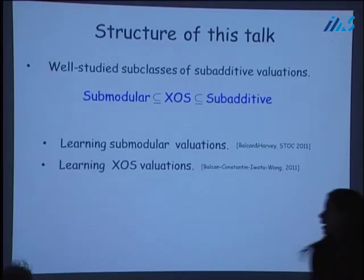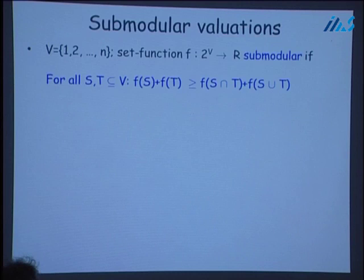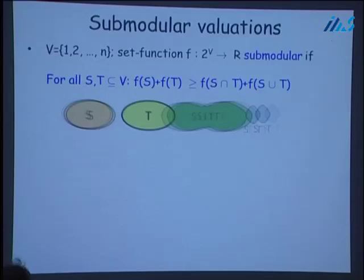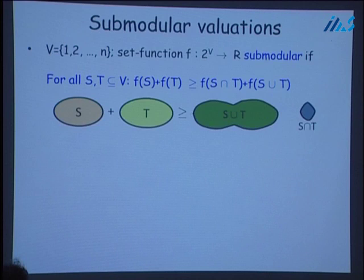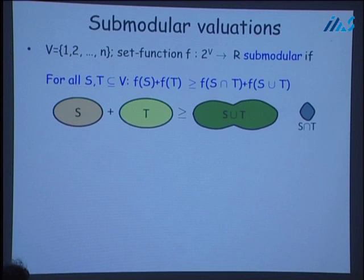I start by talking about learning submodular valuations. To briefly remind you the definition: a real-valued set function defined over all subsets of the ground set is submodular if for all subsets S and T, we have F of S intersect T plus F of S union T is upper bounded by F of S plus F of T. Clearly, if the function is non-negative, then any submodular function is a sub-additive function.